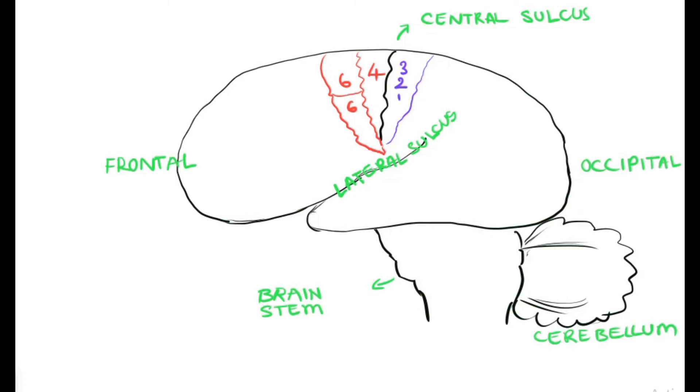The supplementary areas and areas of the sensory cortex, 60% from area number 6 and 40% of the fibers from the sensory areas, descend down as the corticospinal tract we already discussed in the previous video.